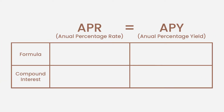APR and APY may sound the same, but they are not equal. APR is calculated by multiplying the daily interest rate by 365, and represents the return you will have in one year without compounding, if the yield doesn't vary.